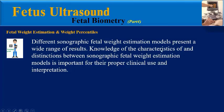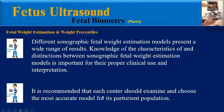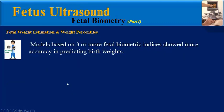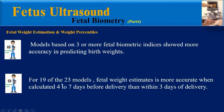Final teaching points: Different sonographic fetal weight estimation models present a wide range of results. Knowledge of the characteristics of and distinctions between models is important for their proper clinical use and interpretation. It is recommended that each center examine and choose the most accurate model for its parturient population. Models based on 3 or more fetal biometric indices showed more accuracy in predicting birth weights. For 19 of the 23 models, fetal weight estimates are more accurate when calculated 4 to 7 days before delivery than within 3 days of delivery.